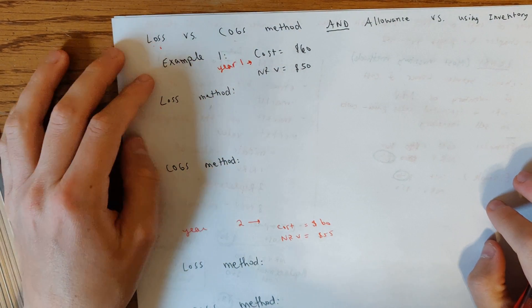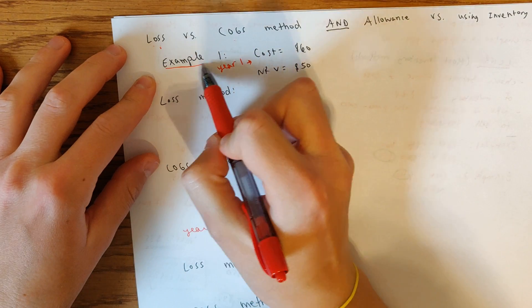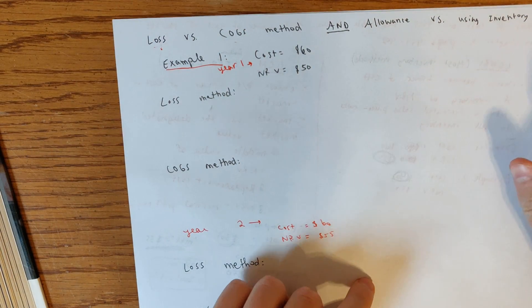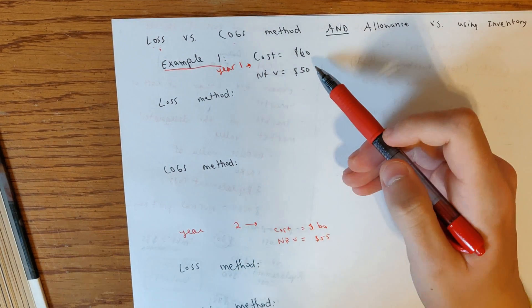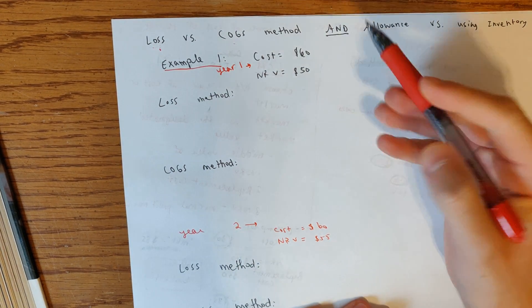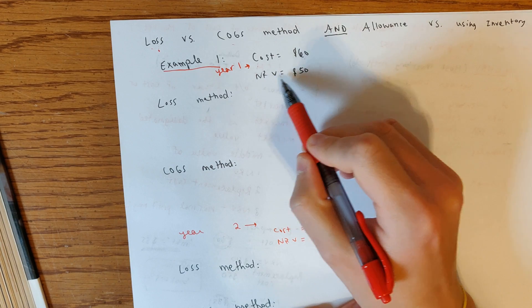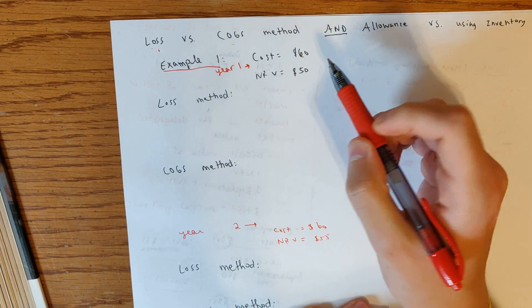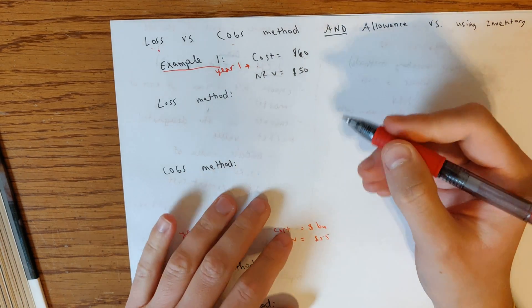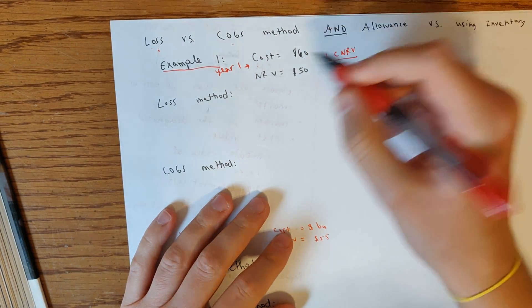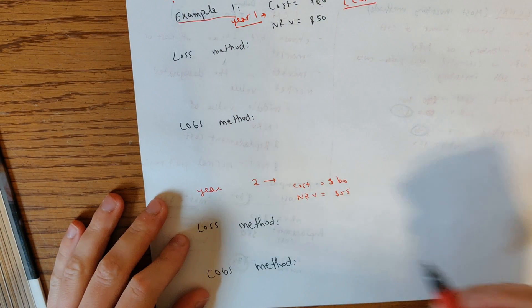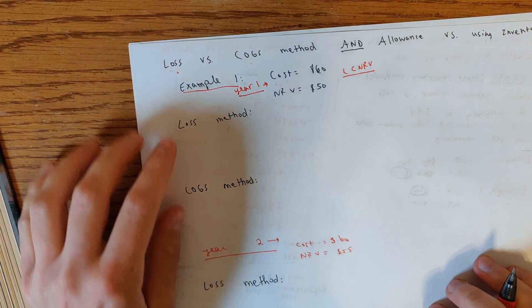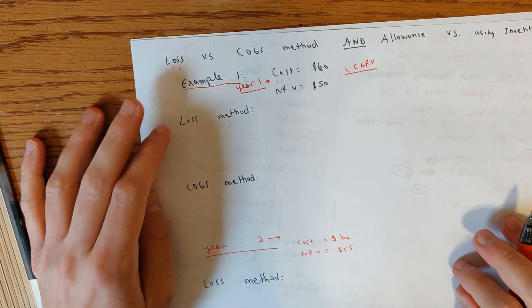All right. So we're going to continue with example one that we had on the previous video. And I copied the facts. They're not necessarily very complicated. But just so we can remind ourselves, cost was 60, NRV is $50. So here we're going to be doing LCNRV. We have all the information we need and we're doing year one. And then at the bottom, if you can see, we're going to do year two.